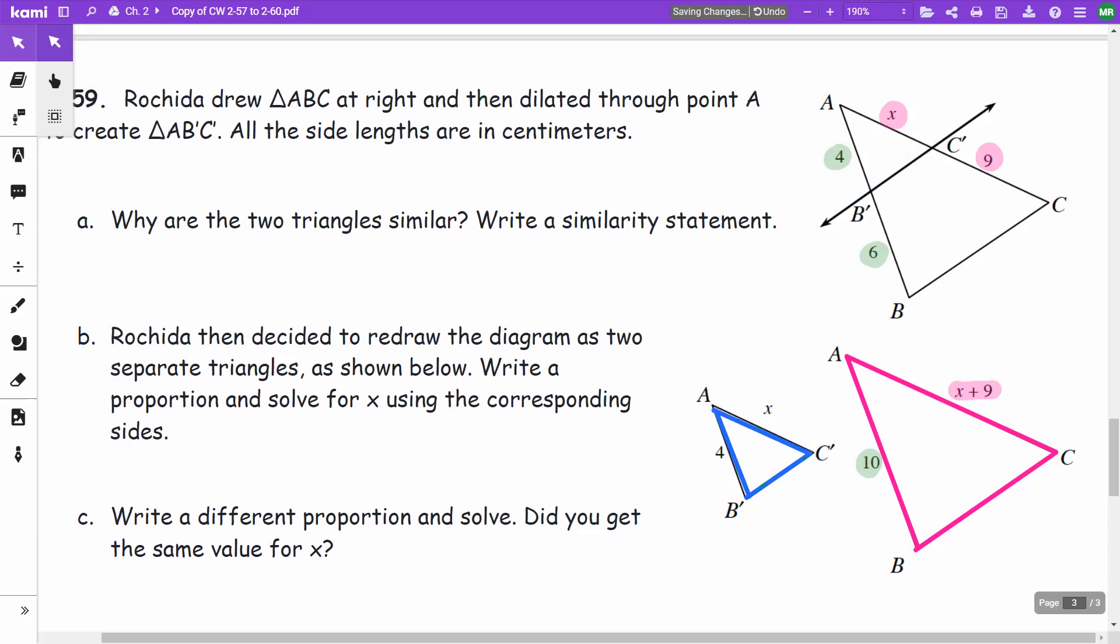Now, what you want to pay attention to is I have a 4 on this side and 4 here. I have an X here and an X here, so that's those two triangles just drawn out.